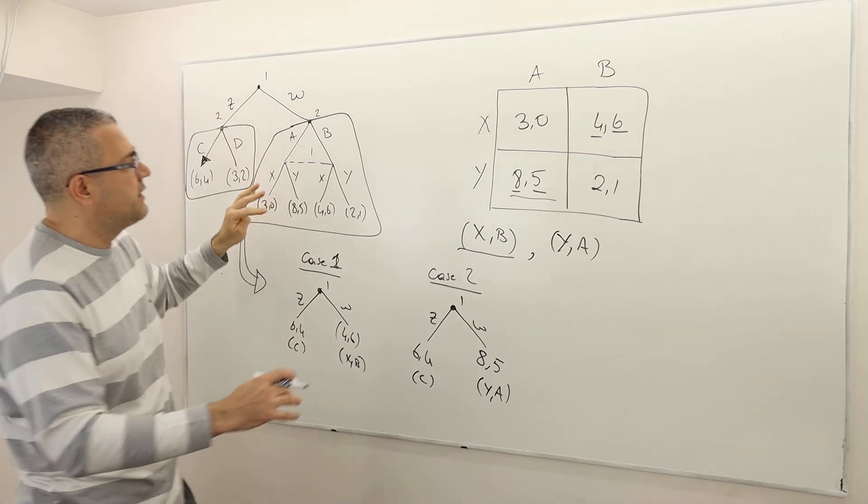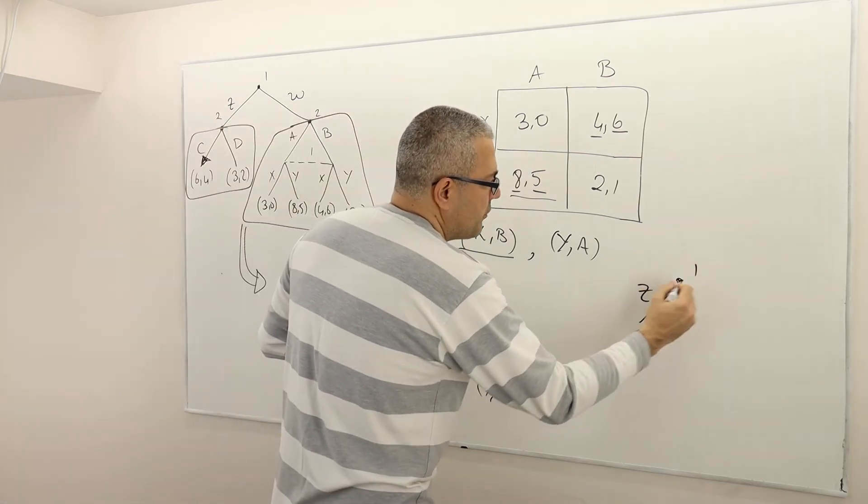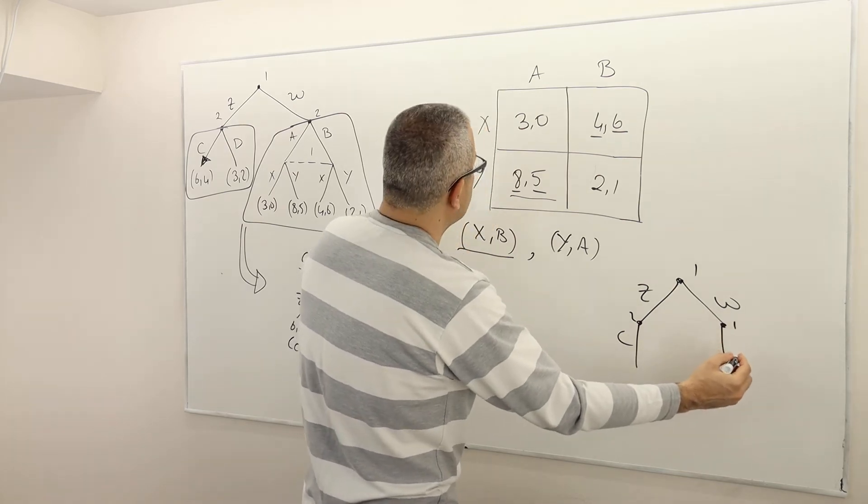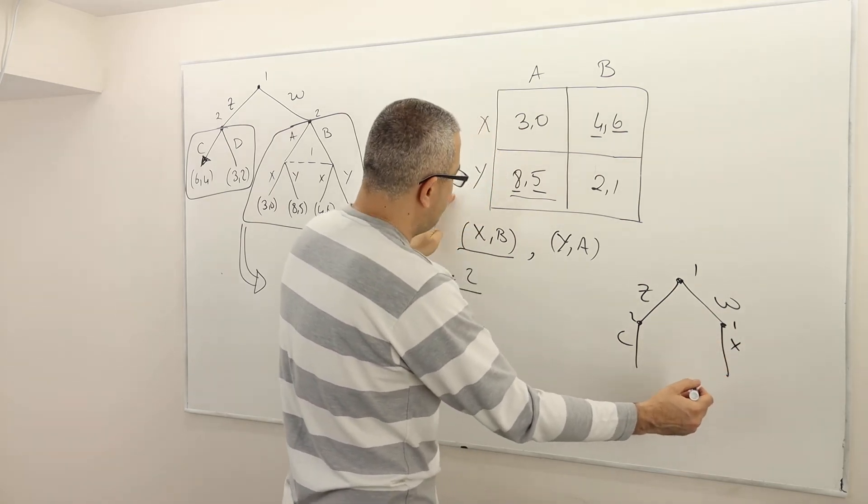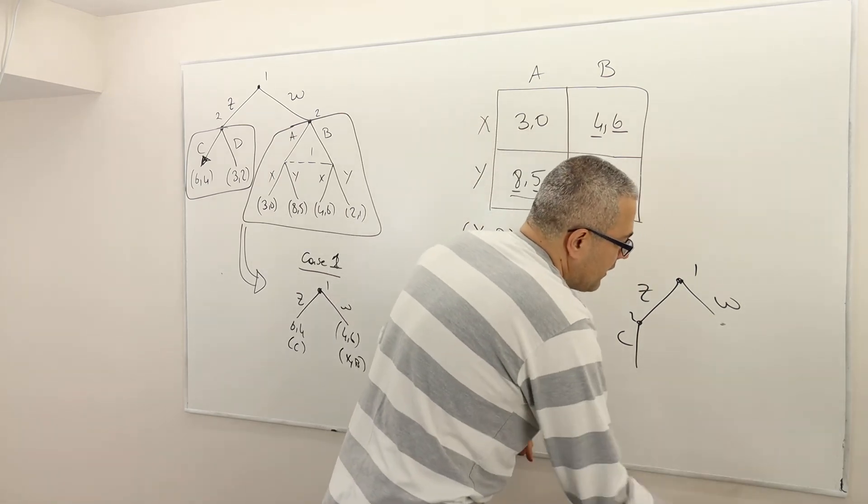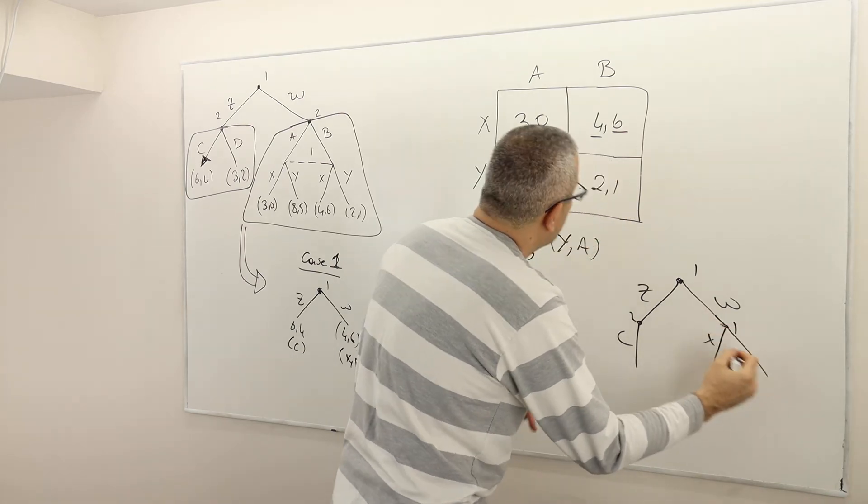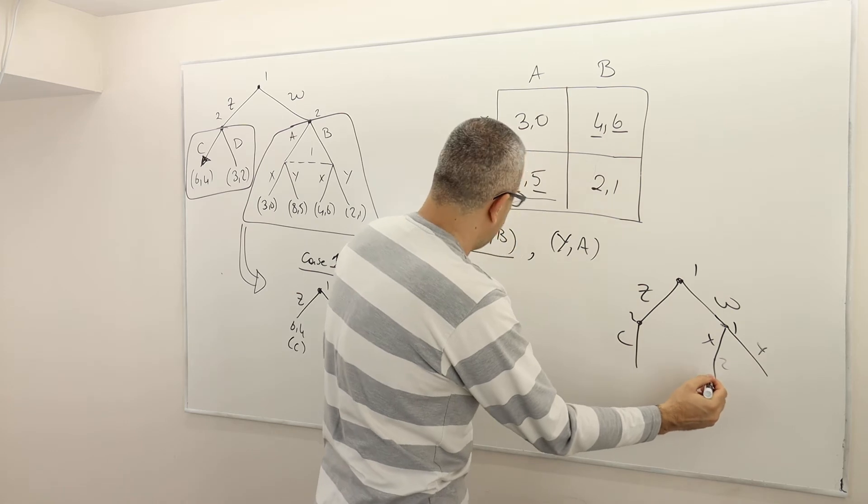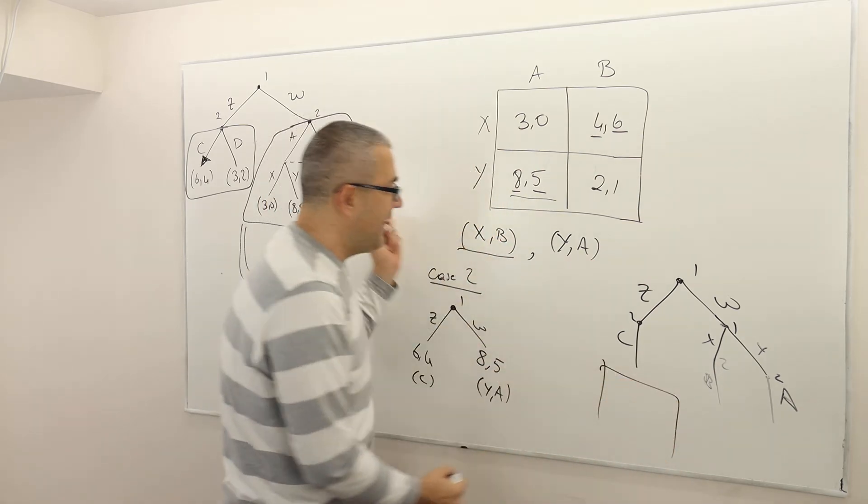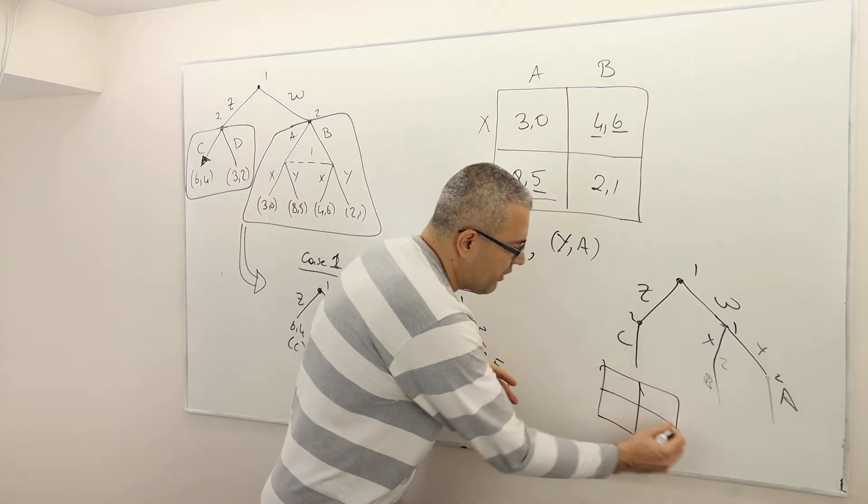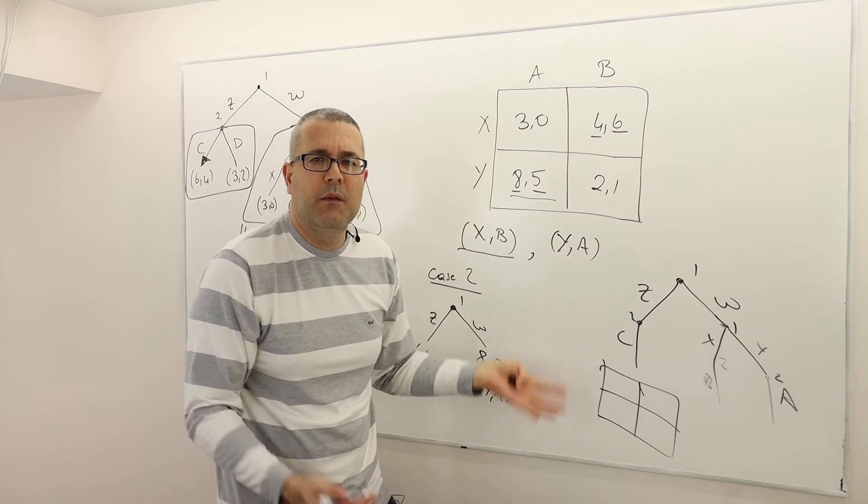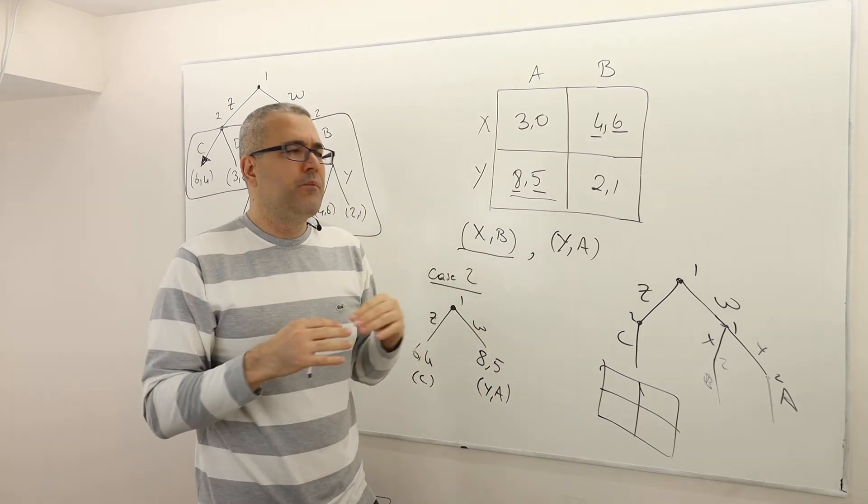Well, the thing is, some students, for some reason, transform this game something like this. Player 1 is going to choose Z or W. And then player 2 is going to play C here. And then here, player 1 is going to play X versus Y. And then player 2 plays B. And then player 2 plays A. Alright? So then they try to, I mean, they transform the game this way. And then write down the normal form of this game. And then find the Nash equilibrium of this game. Well, I mean, this is all wrong. You can't do that.